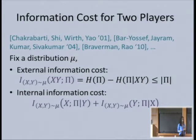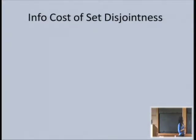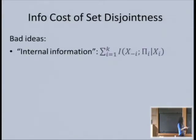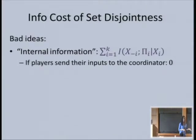Let's see what happens in the message-passing model. Can we use one of these notions or do we need something new? Actually, we cannot use either. The most naive thing would be to take the generalization of internal information—sum over all players what each player learns about all the rest of the input from the transcript, given their own input. But this can be as low as zero: in the trivial protocol where everybody sends their inputs to the coordinator, the players don't learn anything, so the internal information is zero.